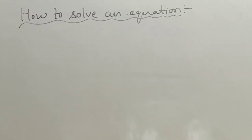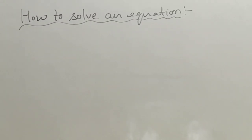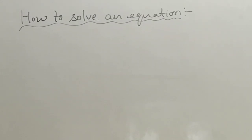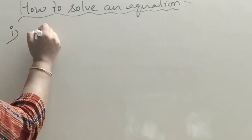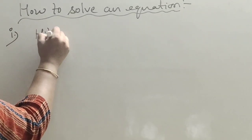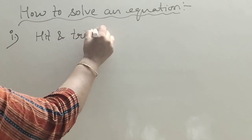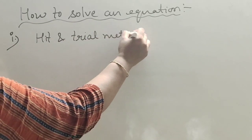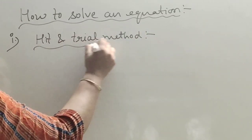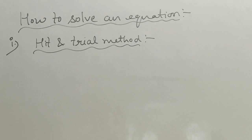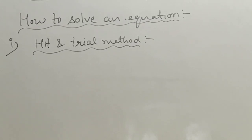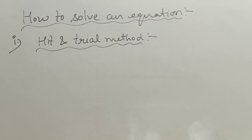The next topic is how to solve an equation — that is, to find out the value of the variable. The first method is the hit and trial method. As the name suggests, we try different values repeatedly until we reach the correct answer.